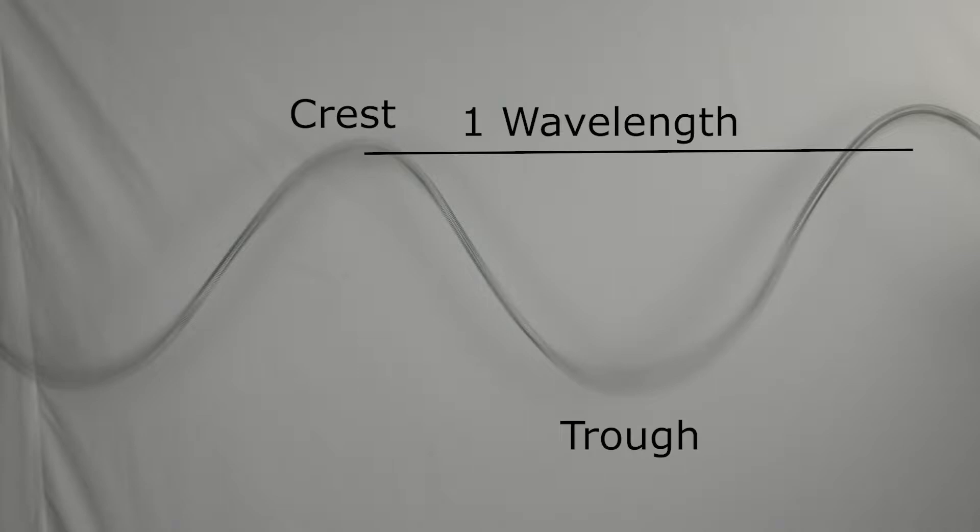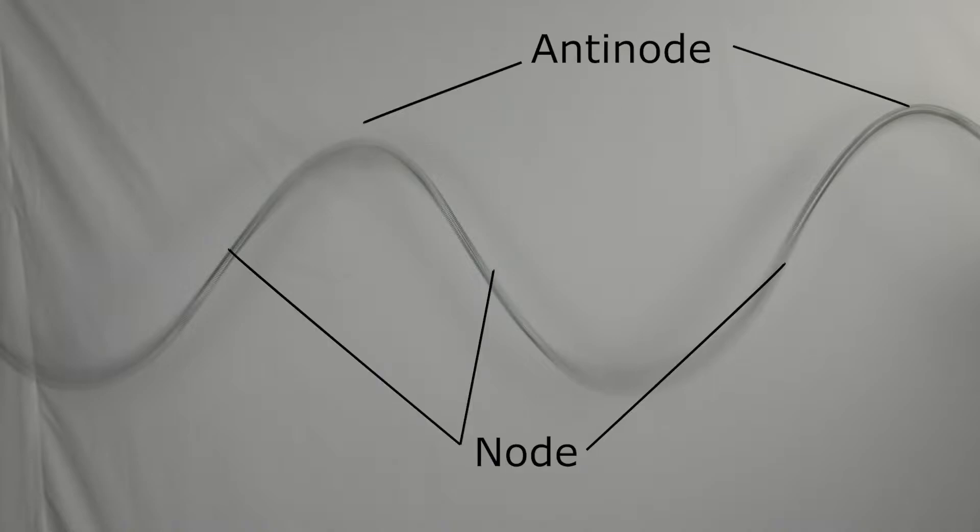A standing wave is important because it helps keep certain aspects of the wave stationary to identify. For example, if you were to freeze this, the tops are the crest, the bottom are the troughs. You have a wavelength from a crest to a crest, or a trough to a trough, and you have the areas of no movement being the node, and the areas of maximum movement being the antinode.